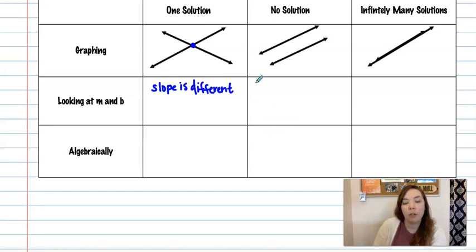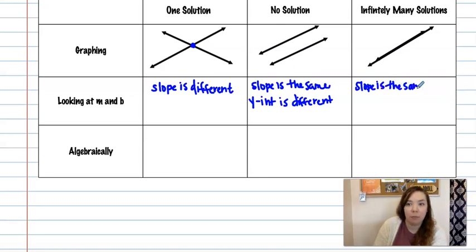For no solution slope is the same. Like they could both have a slope of one half and y-intercept would be different though. And for infinitely many solutions they're the exact same line. So the slope is the same. Y-intercept is the same.